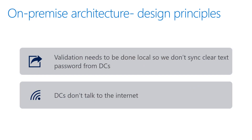For the on-prem architecture, two key principles drove the design. First, we were never going to sync clear text passwords from DCs when validating the password, which meant the policy needed to be locally on the DC so everything could be evaluated there. Second, customers don't allow DCs to talk to the internet for security reasons. Keeping these in mind, we had to get the validation to happen locally but get the policies from Azure AD. This led to the creation of the Azure AD password protection proxy service, which securely proxies calls from DCs to Azure AD.